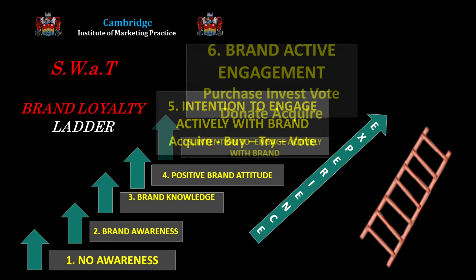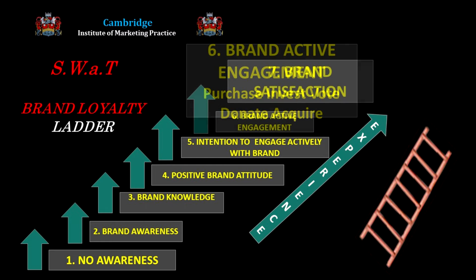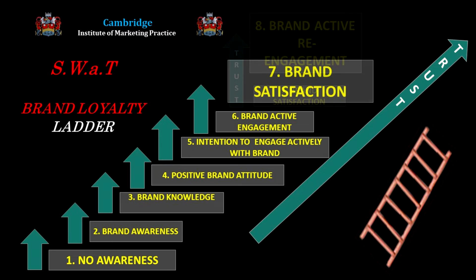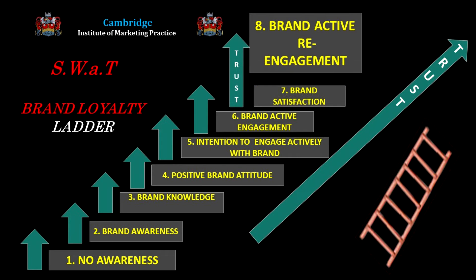Rung six is the big step — the real commitment. I buy the brand, I acquire it, I actively engage, I invest something of myself in it. If I like it, I pass to rung seven, and trust can start to build. Rung seven: satisfaction with the brand. I've used it, I like it, which encourages me to try it again. And I may pass to rung eight.